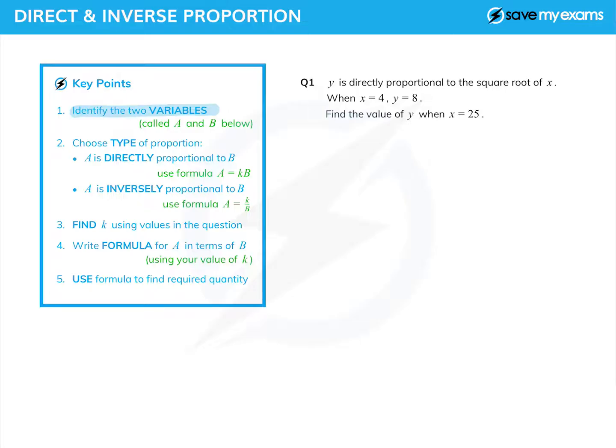I'm going to call them a and b. In this first question, we've got y and the square root of x - those are my two things. We choose the type of proportion, which is normally obvious from the question. If it's directly proportional, we use the formula a equals k times b, where k is a number we're going to find. If it says inversely proportional, we use a equals k over b.